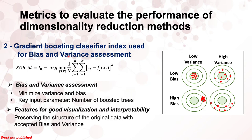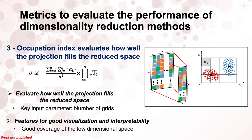The second metric, called the gradient boosting classifier index, evaluates the balance of bias and variance in the reduced data in terms of the number of trees. It also assesses how well the structure of the original data is preserved. The gradient boosting classifier index is defined in terms of the loss function related to the number of trees.